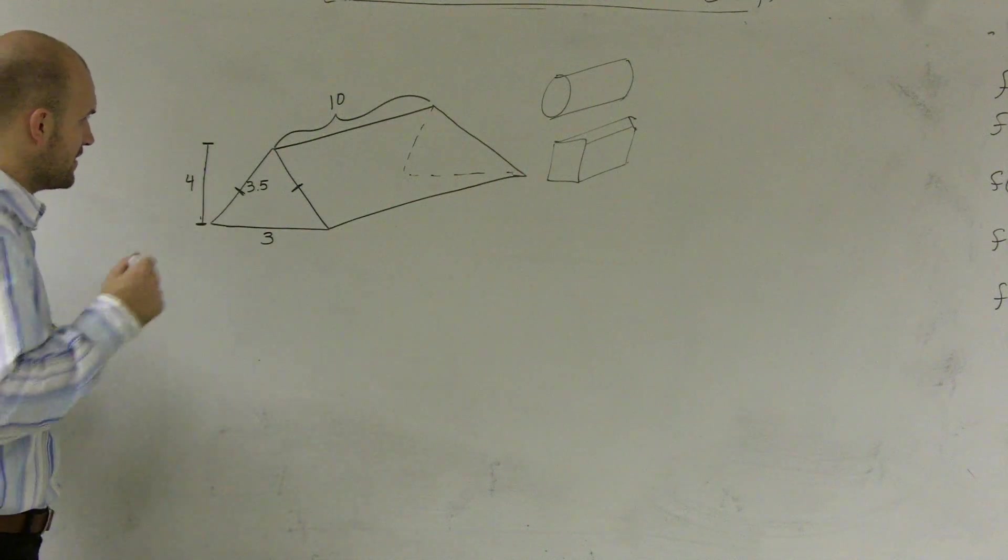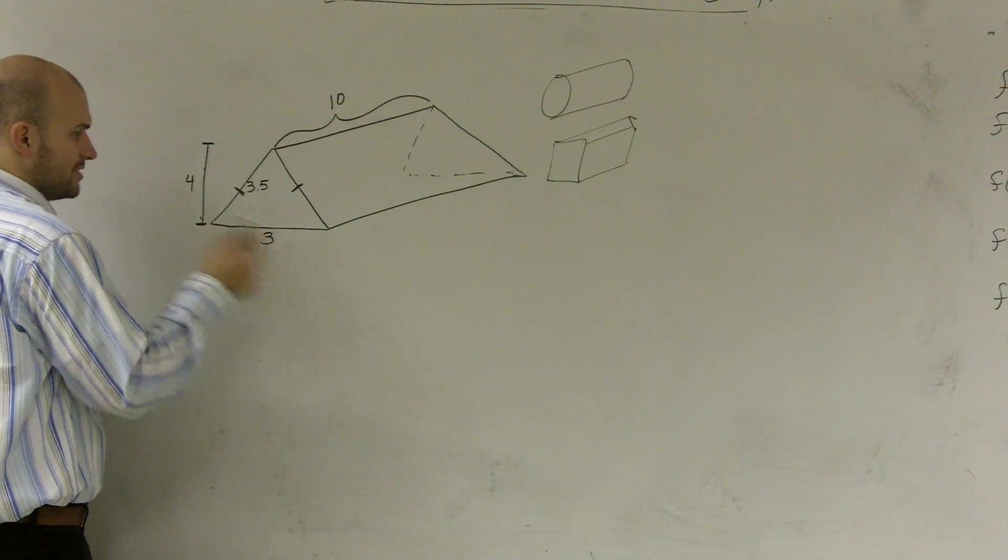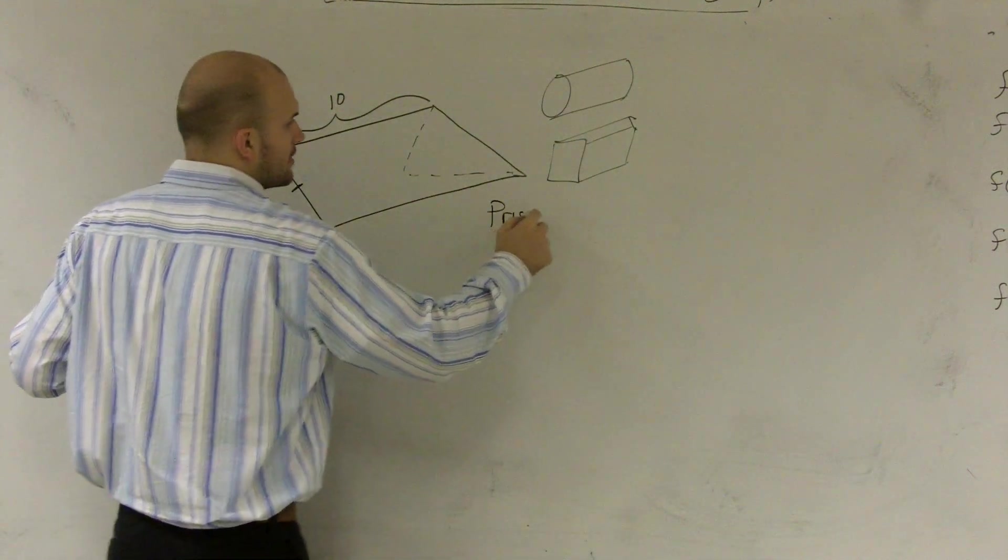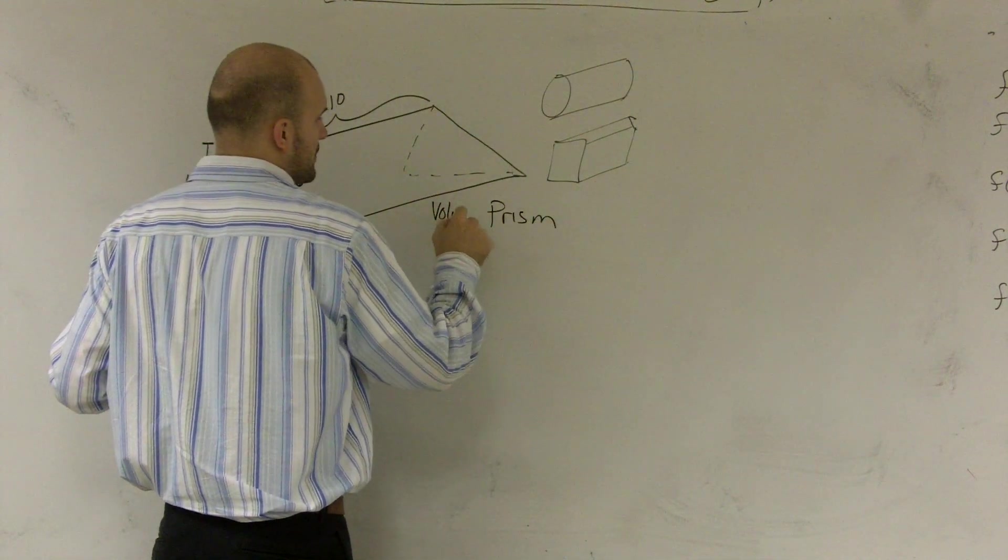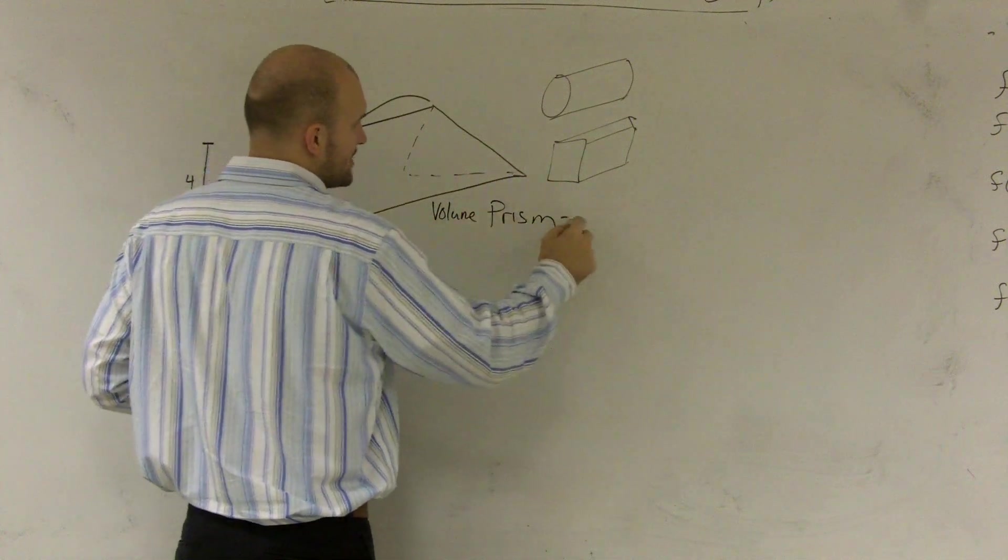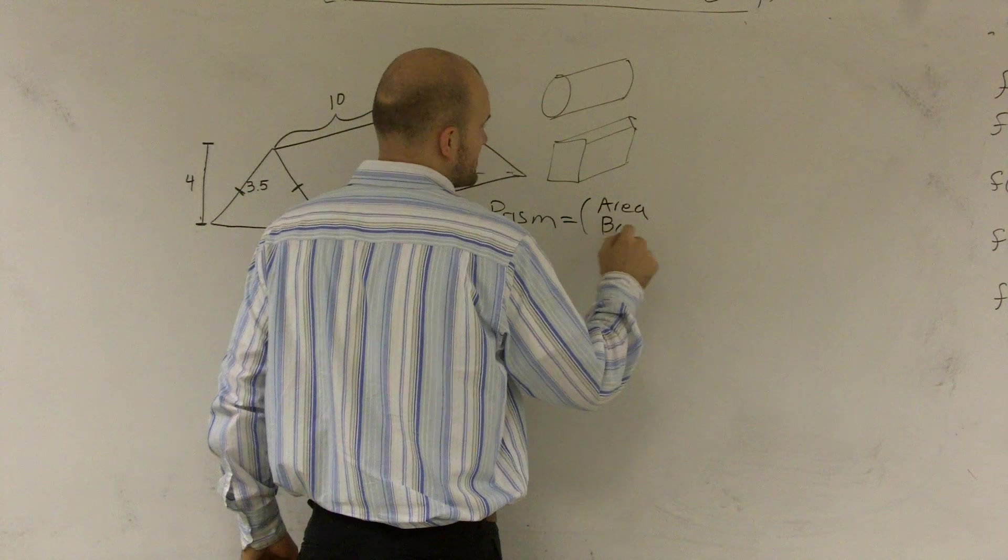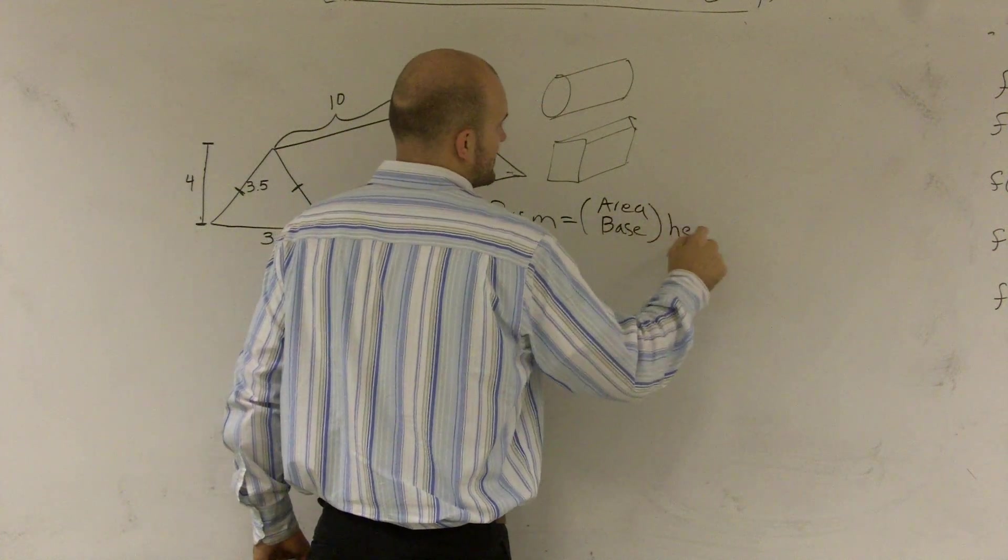So here, the area of my base—actually, let me write this out. The volume of a prism is equal to the area of the base times the height.